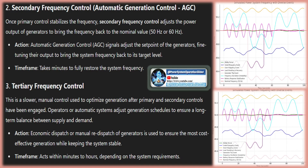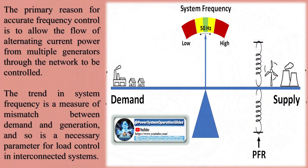The primary reason for accurate frequency control is to allow the flow of alternating current power from multiple generators through the network to be controlled. Frequency of the system will vary as load and generation change. Increasing the mechanical input power to a synchronous generator will not greatly affect the system frequency, but will produce more electric power from that unit. During a severe overload caused by tripping or failure of generators or transmission lines, the power system frequency will decline due to an imbalance of load versus generation.